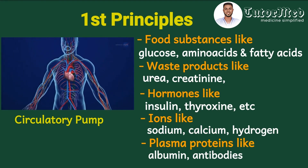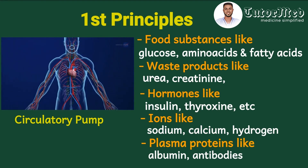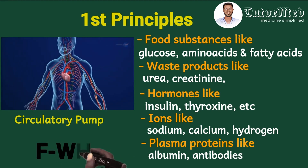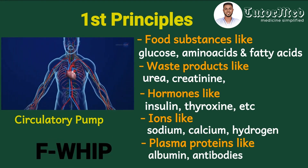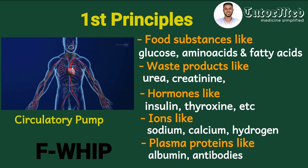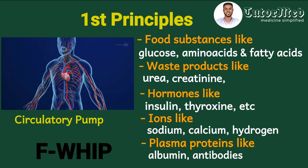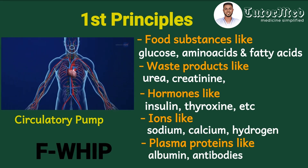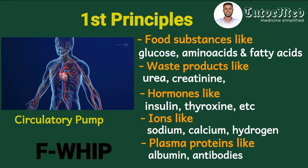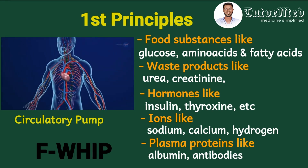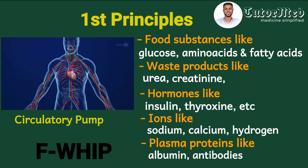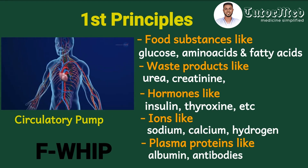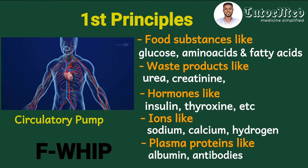These substances can be remembered by the mnemonic F-QUIP: F for food substances, W for waste products, H for hormones, I for ions, P for plasma proteins. They are not limited to only these — you can also have drugs, etc. These are the substances going to the kidneys to be filtered.